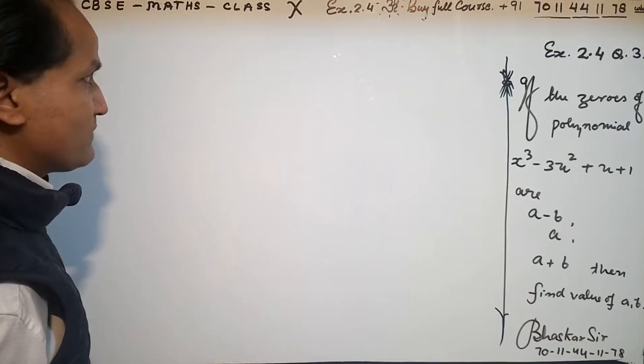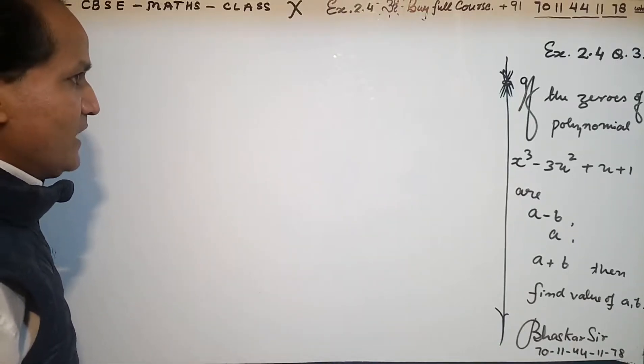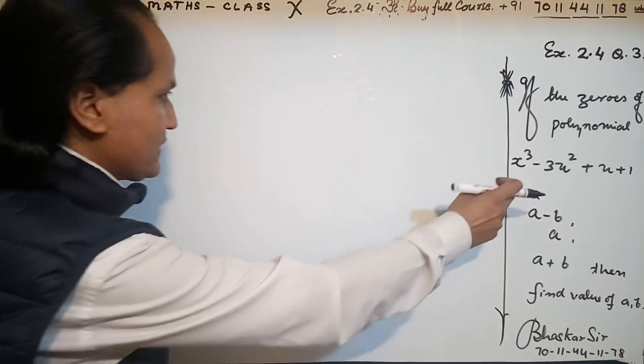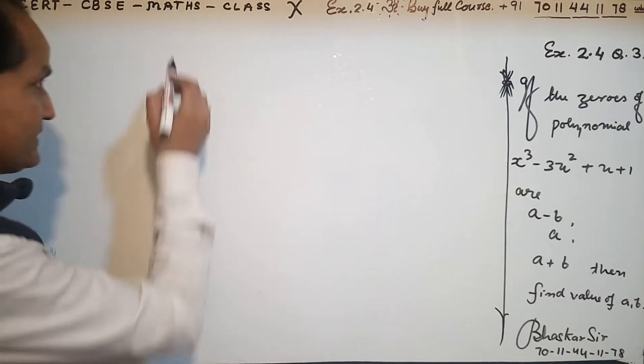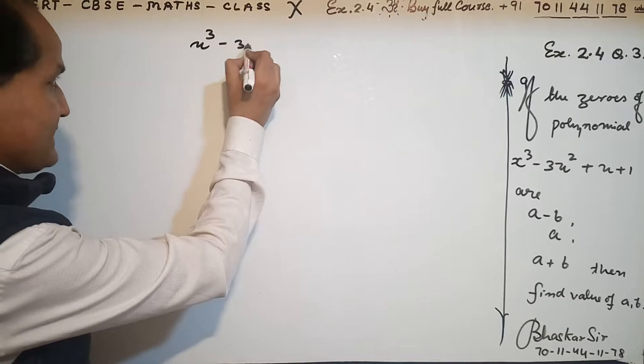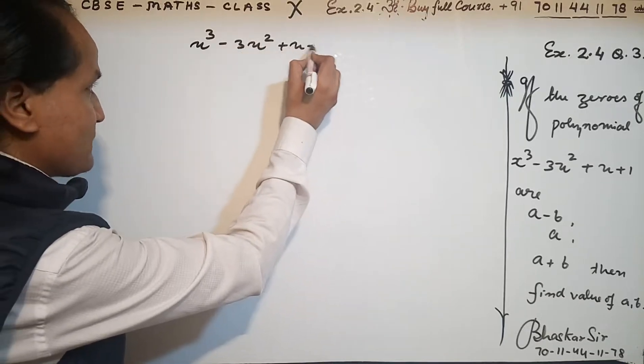Now we are starting question number 3, exercise 2.4, class 10. We have a cubic polynomial: x³ - 3x² + x + 1.